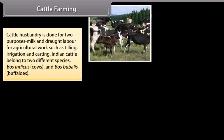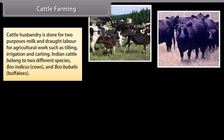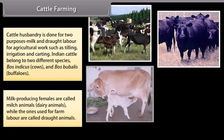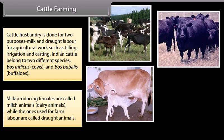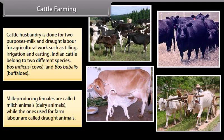Cattle husbandry is done for two purposes: milk and drought labor for agricultural work such as tilling, irrigation and carting. Indian cattle belong to two different species — Bos indicus (cows) and Bos bubalis (buffalos). Milk-producing females are called dairy animals, while those used for farm labor are called drought animals.